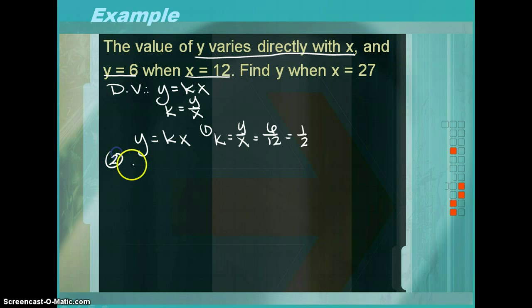The second step is to write the actual direct variation equation. So, y is equal to 1 half x. From here, you simply want to plug in the value of the given x so that you can find the matching y.